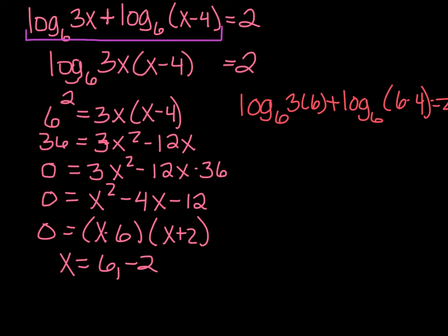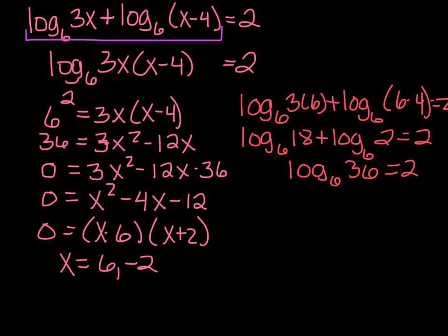Okay, so log base 6 of 18 plus log base 6 of 6 minus 4 is 2 should equal 2. Condense them together, we get log base 6 of 18 times 6 should equal 2, and that's true, 6 to the second equals 36, so we're good.